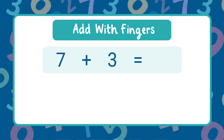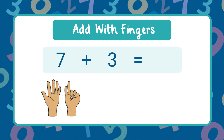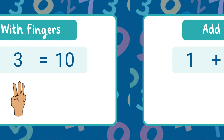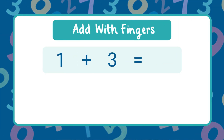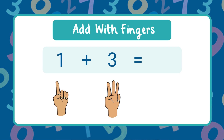Now you try — what is seven plus three? Hold up seven fingers, then three more. Count them all. Ten fingers — the sum is ten. Try this one — what is one plus three? Hold up one finger, then three more. Count all the fingers. The sum is four.